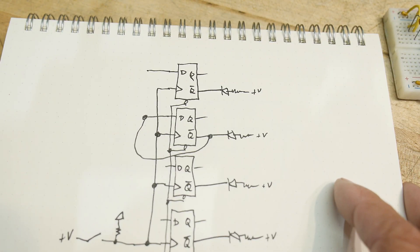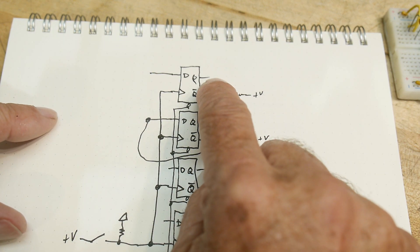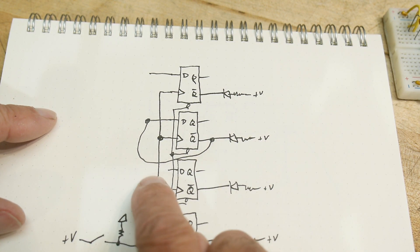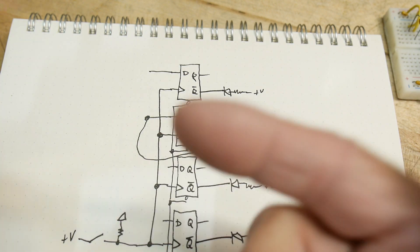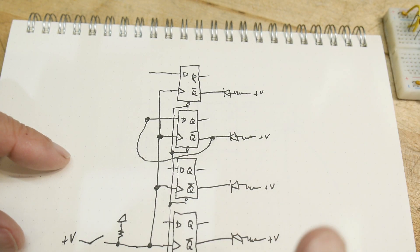So, they said you can use it as a shift register that indeed you could tie this Q into this D and this Q into this D and this Q into this D. So, every time you clock it, it will shift down one. Okay.